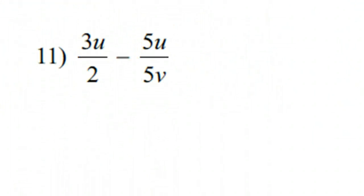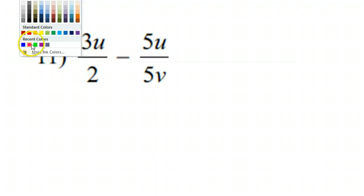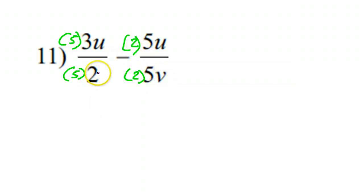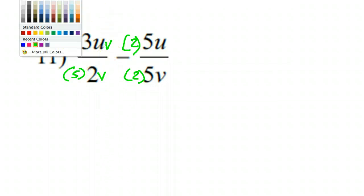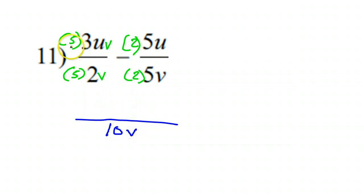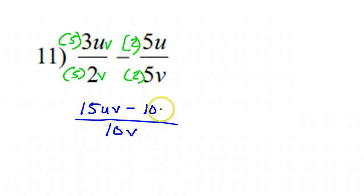Now number 11. This side's going to need a 5 to be like that; this side's going to need a 2 — got to do it to the top and the bottom. This side has a v, so I'm going to have to give this side a v in the top and the bottom. Now the denominators are the same: 10v and 10v. So I can go ahead and subtract using the 10v denominator. Now here I have 15uv minus 10u.